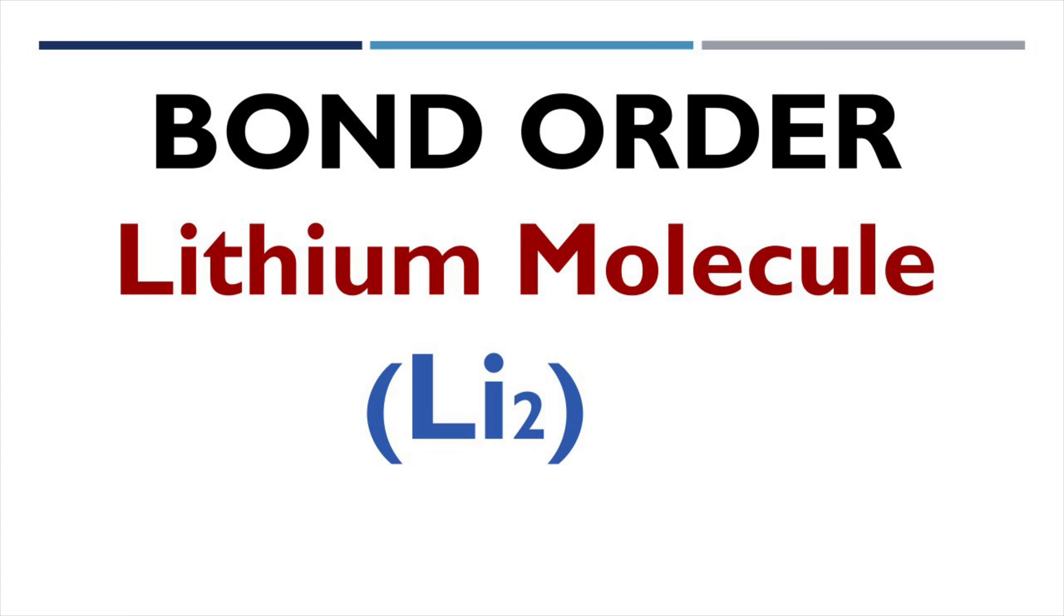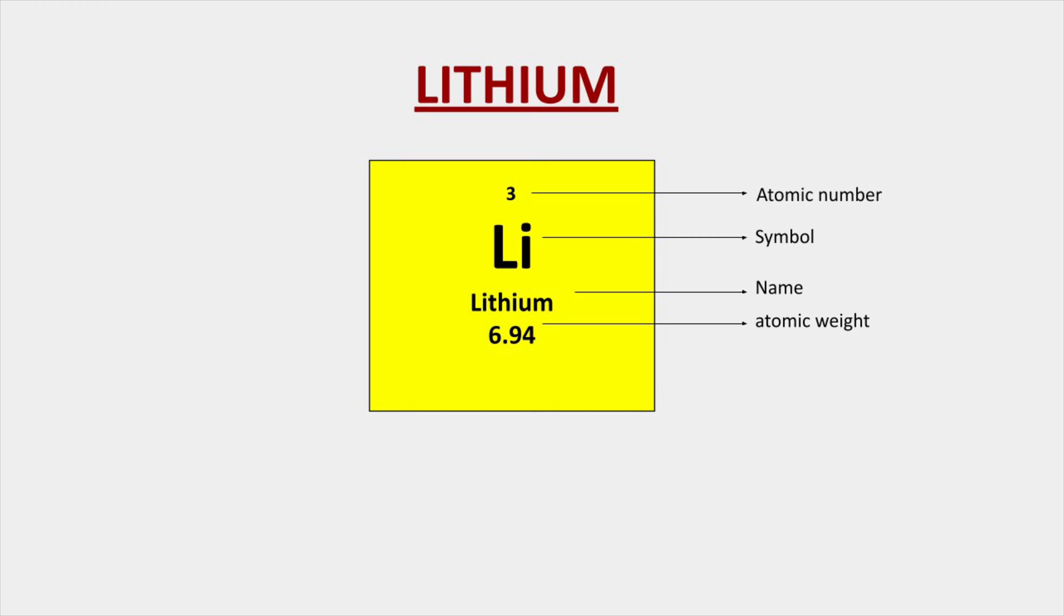Lithium molecule is formed by the combination of two lithium atoms. Lithium atomic number is 3, so if it is a lithium molecule, there must be 6 electrons.